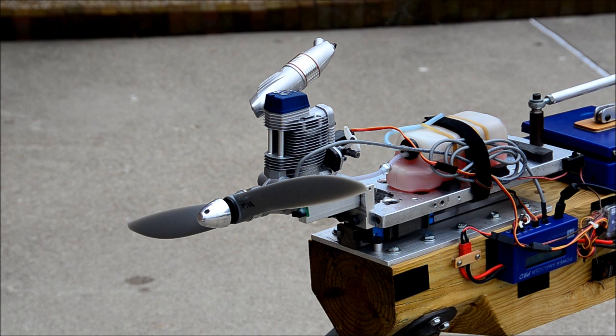Again, this is the APC 17x8 propeller. Peak RPM is 8,650, producing 18 pounds of thrust.